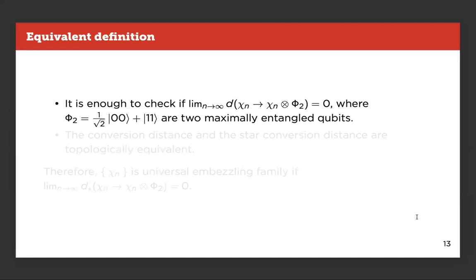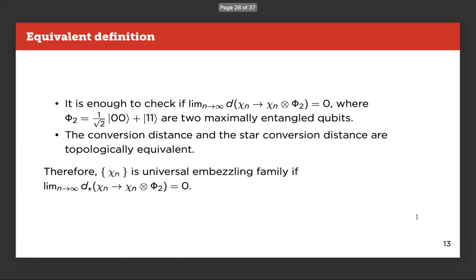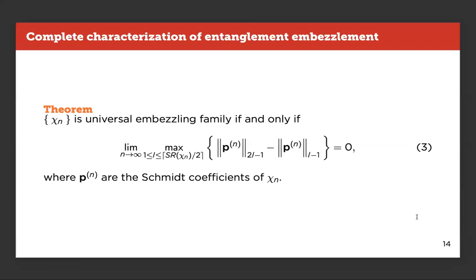And in our work, we tried to characterize all possible embezzling families. We first noticed that we don't have to check all σs, but it's enough to check the maximally entangled two qubit states. And since we are dealing only with pure states, we can use the star conversion distance instead of the standard conversion distance. And so we say that χ_n is a universal embezzling family if the limit of the star conversion distance goes to zero. So by using the formula that we showed at the beginning for the star conversion distance, we were able to prove this theorem.